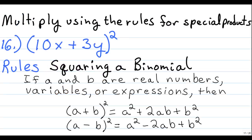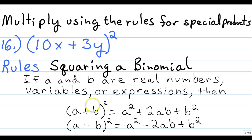Question 16 has the same instructions: multiply using the rules for special products. We're given the binomial (10x + 3y) raised to the second power. The rule for squaring a binomial states: if a and b are real numbers, variables, or expressions, then (a + b) squared equals a squared plus 2ab plus b squared, or (a − b) squared equals a squared minus 2ab plus b squared. Ours is the plus situation.